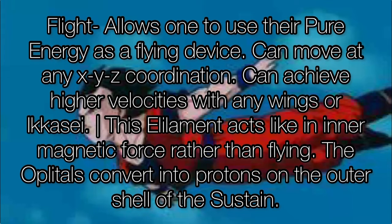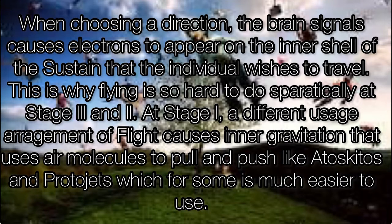Flight allows one to use pure energy as a flying device and can move at any XYZ coordination, achieving higher velocities with wings or ikase. This element acts like an inner magnetic force. The oplotals convert into protons on the outer shell of the sustain; when choosing a direction, the brain signals cause electrons to appear on the inner shell of the sustain in the direction the individual wishes to travel. This is why flying is hard to do sporadically at stages three and two. At stage one, a different usage arrangement of flight causes inner gravitation that uses air molecules to pull and push, which for some is much easier to use.